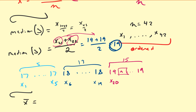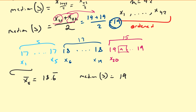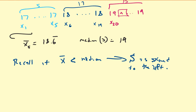So we have x-bar equal to 18.6 repeating and the median equal to 19. Since the mean is less than the median, the data set is skewed to the left. Skewed to the left means most of the data is on the right.